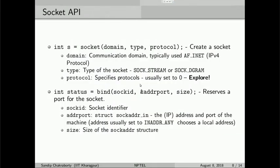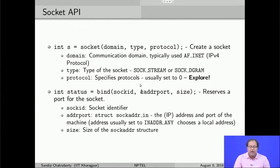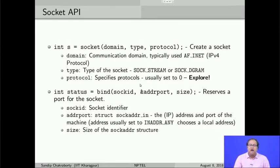When declaring a socket, you declare an integer variable s to hold the socket ID. The socket system call takes three parameters: domain, type, and protocol. The domain is the communication domain — normally we use AF_INET for IPv4. The type is either SOCK_STREAM for TCP or SOCK_DGRAM for UDP. The protocol field is usually set to 0. Once the socket system call is done, on the server side the next call is bind, which binds a port number to the socket.